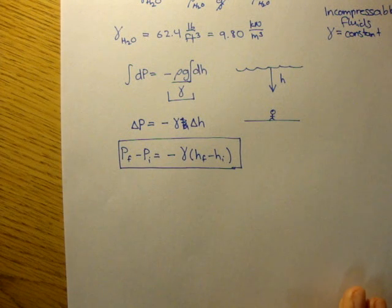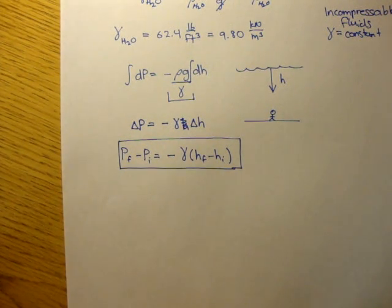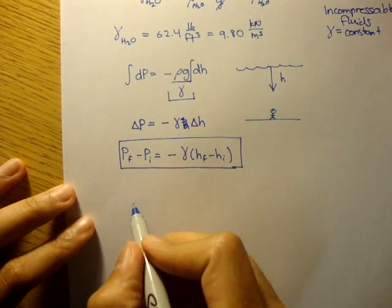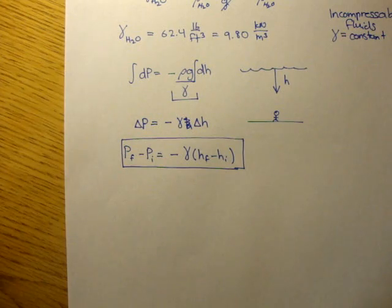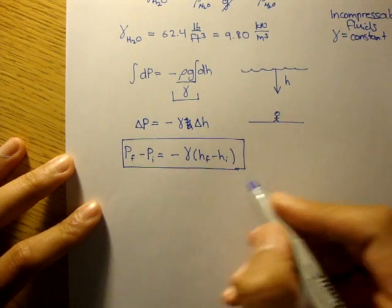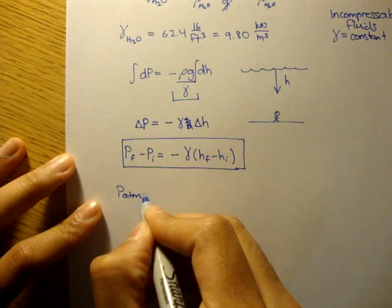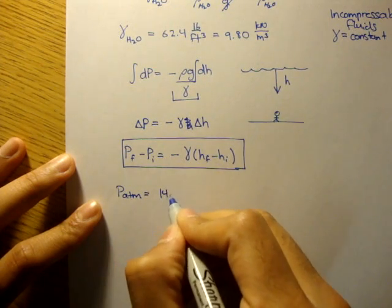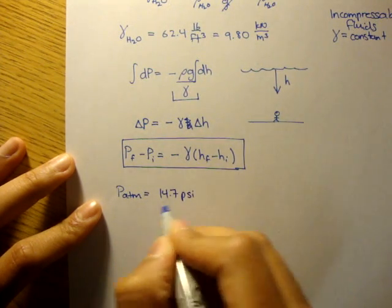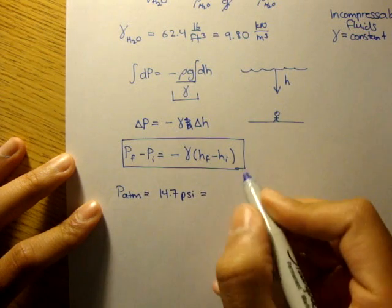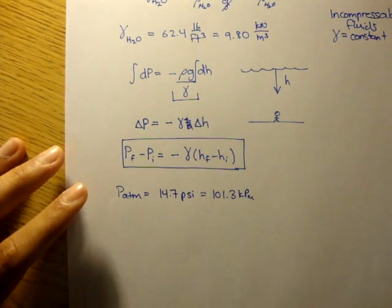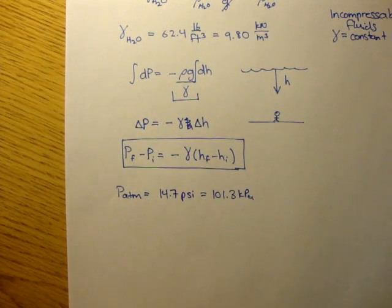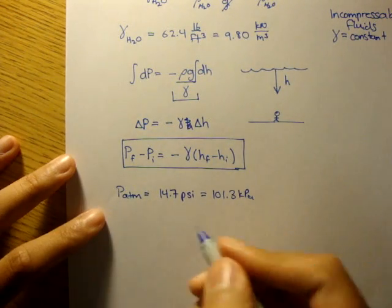One last thing, gauge pressure, absolute pressure, and atmospheric pressure. Atmospheric pressure is just the basic pressure at sea level. And some common atmospheric pressures are 14.7 PSI, that's in U.S. customary units, and 101.3 kilopascals, that's in metric units.